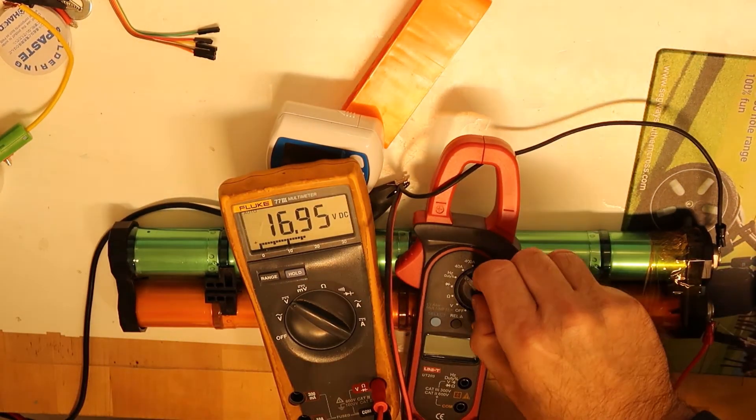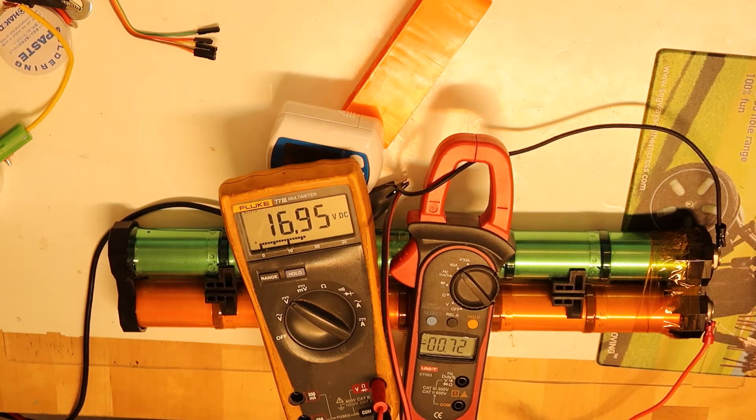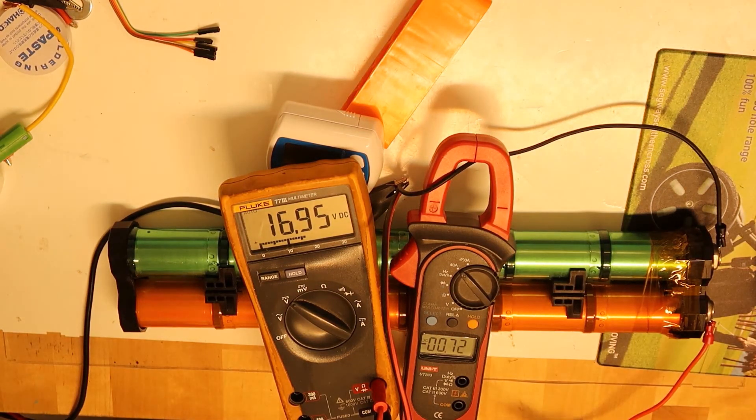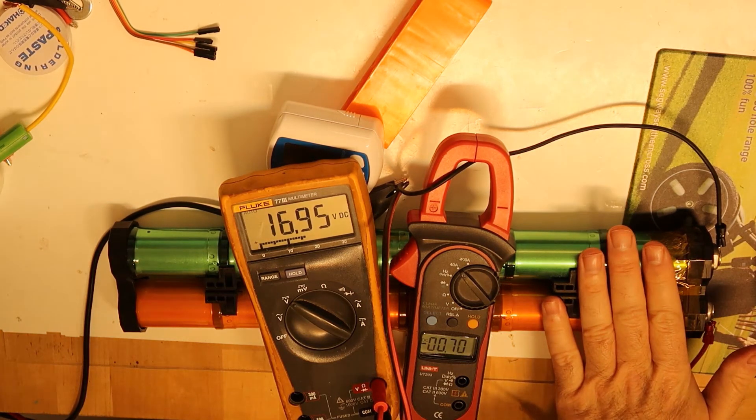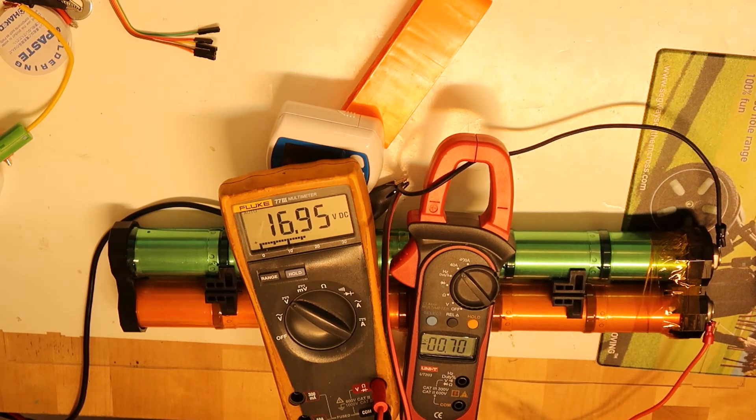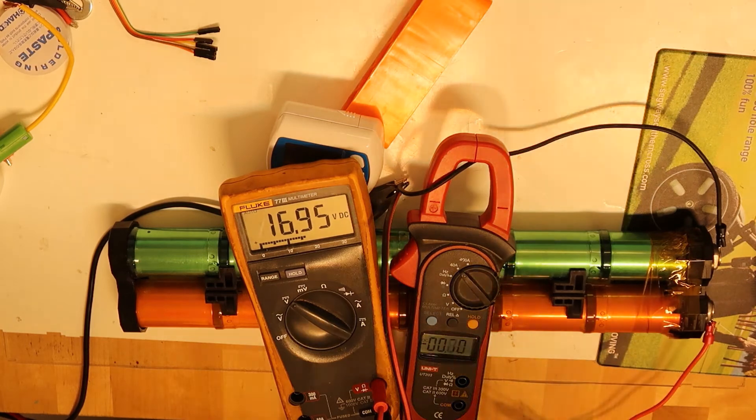So this was fully charged. You can see that the current is dropped to 700 milliamps. So consider this is fully charged and now we will do the discharge test and check how much capacity in these cells.